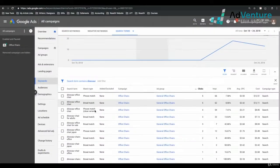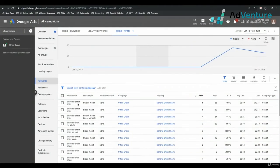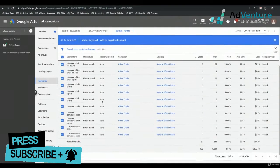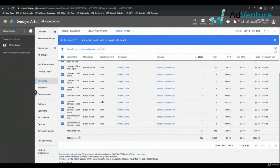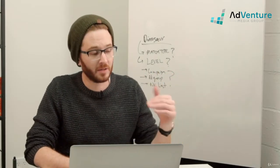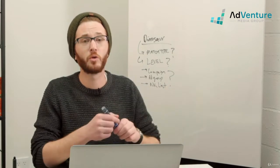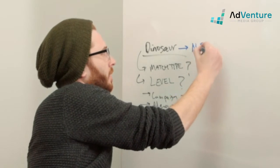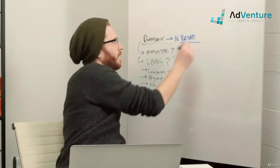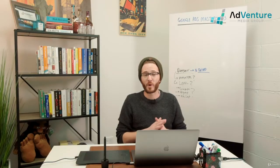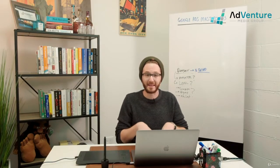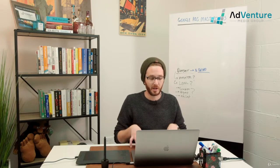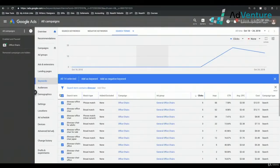We have a lot of search terms we would have to add as negatives: Dinosaur office chair, Dinosaur chair office, Dinosaur chairs. I could select all and add them as negative keywords. But I don't need to do that — from our previous lecture, if I add Dinosaur as a negative broad match, then whenever the word Dinosaur shows up at any account level that has that negative keyword applied to it, the search term would be ineligible from triggering any of our keywords.